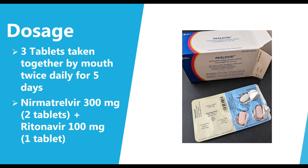In terms of the dosage of Paxlovid, it's going to be three tablets taken by mouth together twice daily for five days. It's kind of pre-packaged, so it's easy to understand. You're going to be taking 300 milligrams of the nirmatrelvir — two tablets — plus 100 milligrams of the ritonavir, one tablet, as you can see right here. There's a dose in the morning that's three pills and a dose in the evening that's three pills, for five days. The medication can be taken with or without food. The only other caveat is that if you have moderate kidney disease, you're actually only taking two pills instead of three.